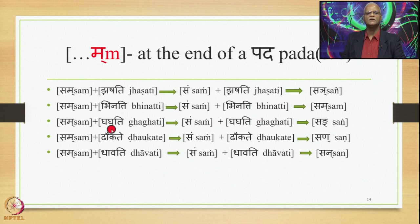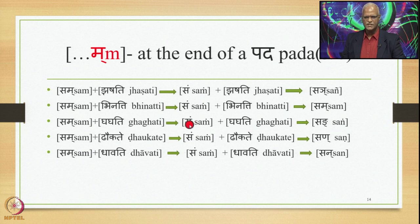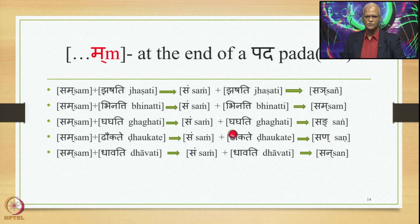Sam plus Ghaghati: 8.3.23 applies, substituting Ma by Anuswara, giving Sam Ghaghati. This becomes input for 8.4.59 Vapadantasya, which substitutes the Anuswara by the nasal Parasavarana of Gha, which is Ng, giving Sam-Ng-Ghaghati optionally. Optionally also Sam Ghaghati (with Anuswara) is generated.